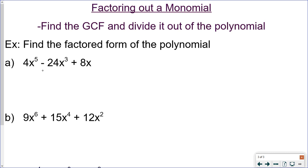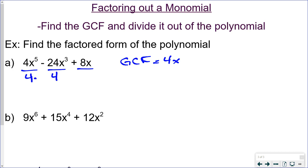So, factoring a monomial out of a polynomial — we find the greatest common factor and divide it out. For coefficients 4, 24, and 8, the greatest common factor is 4. The biggest power of x we can pull out is just x. So we divide each term by 4x. This is the opposite of the distributive property — instead of multiplying something in, we're dividing something out. The 4x comes out in front, and what we get when we divide goes in parentheses.